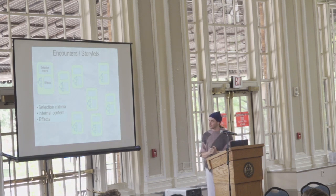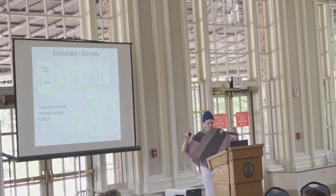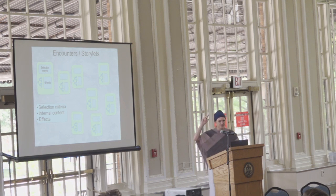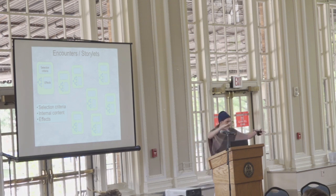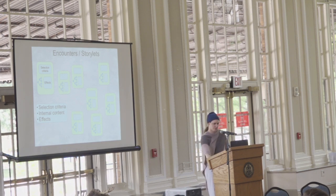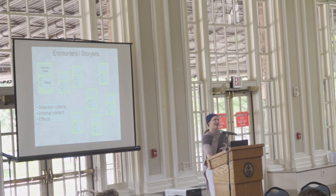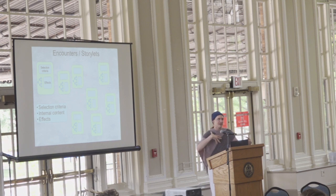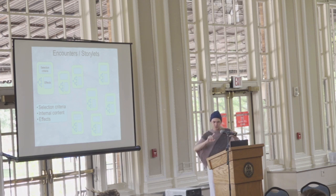Putting that all together: in a storylet system you have a lot of little pieces of content. Each of those pieces has certain selection criteria that says this is when this can occur. You have some internal content that says this is what happens when the storylet occurs. And then there are effects and changes to those global variables based on the choices the player makes and the choices that the characters make as well. Every turn, or at certain points in the game, the engine will select which storylet is going to occur based on the current state of global variables.